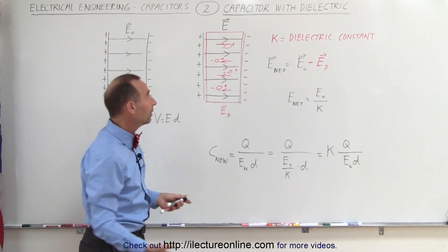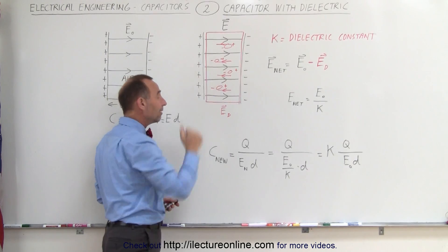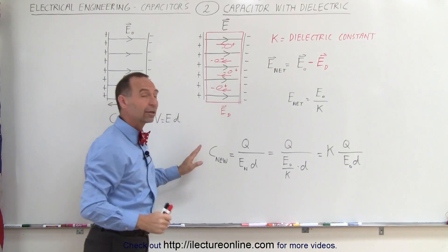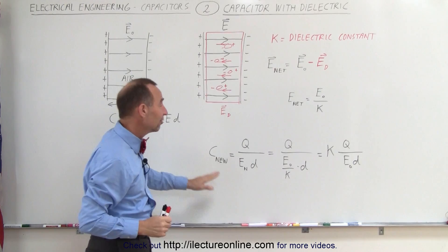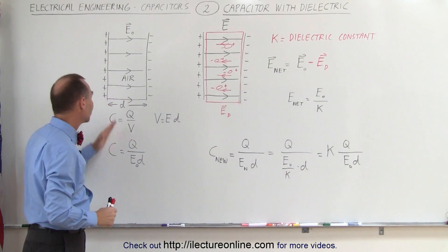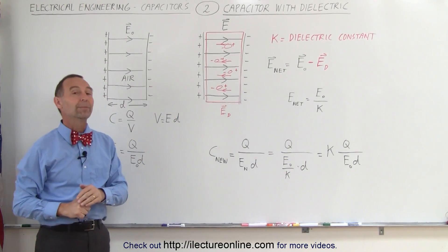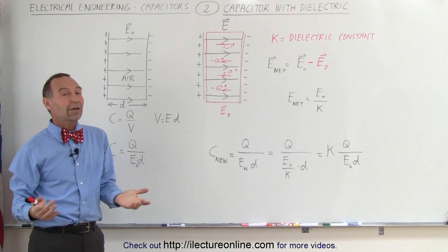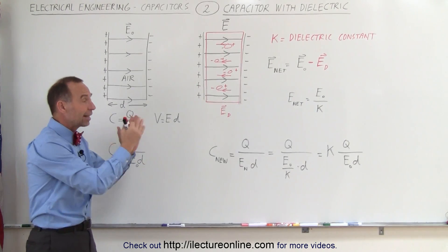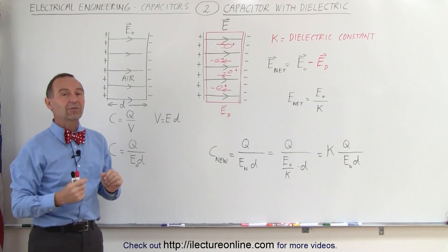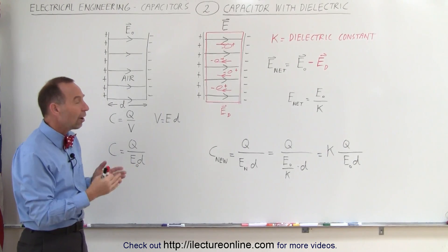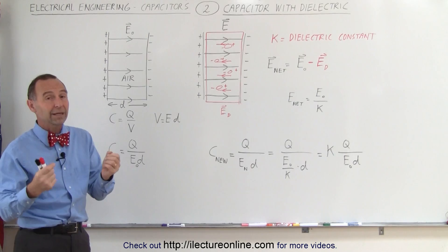For example, if the dielectric constant is equal to 5, that means when we place a dielectric in there, the capacitance of the capacitor is now 5 times as large as the original capacitor that simply had air in between. That is how dielectrics affect capacitors, and that's why dielectrics are often placed in capacitors — to increase the capacitance without having to make the capacitor bigger.